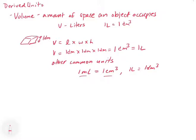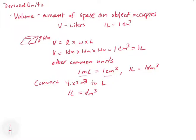Now let's look at unit conversions with derived units, because these are a little more challenging. Let's say we want to convert 4.23 meters cubed to liters. We know that for every one liter, this equals one decimeter cubed, which is helpful because now we have it in cubed length. What we really need is a unit conversion that allows us to go from decimeters cubed to meters cubed. If we can get from meters cubed to decimeters cubed, we can then go from decimeters cubed to liters using that unit conversion.